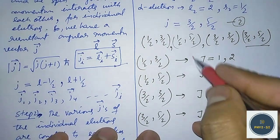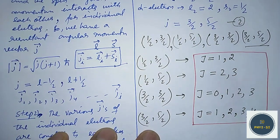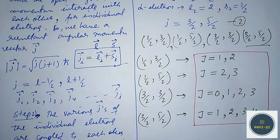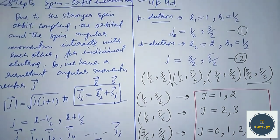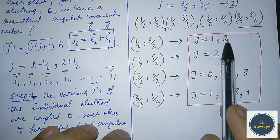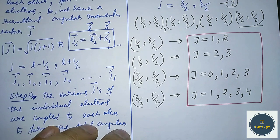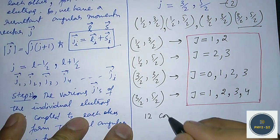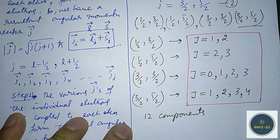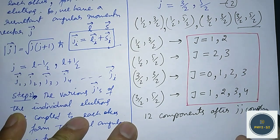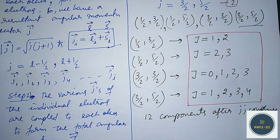We can see that these are the possible J values for the 4P and 4D electrons. After JJ coupling — which applies to heavier atoms — the energy state will be split into 12 components. We will have 12 components after JJ coupling for the 4P and 4D electrons.